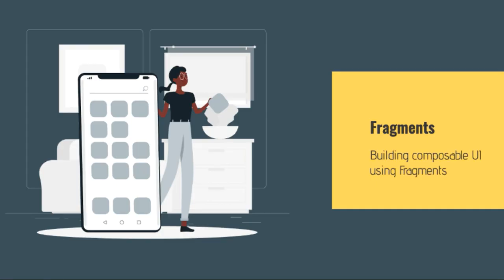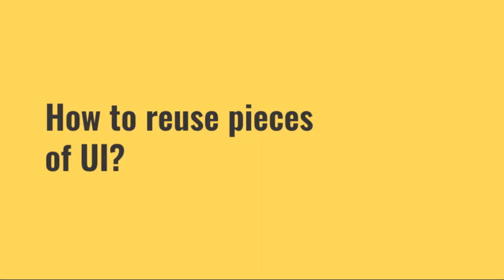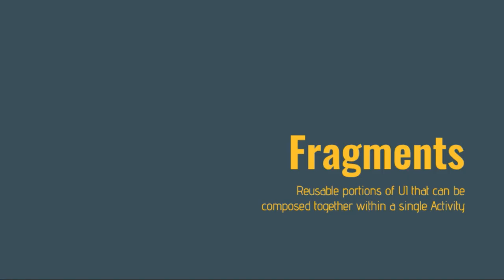So what exactly are fragments? A simple way to describe fragments is a means of reusing pieces of user interface. In our weather app, we have a screen with an icon, a label, and an edit text to enter the zip code. If we wanted to reuse that on multiple screens, rather than re-implementing it from scratch, we could put all of that UI and logic into a fragment and reuse it on different activity screens. A fragment is a reusable portion of UI that can be composed together within a single activity.